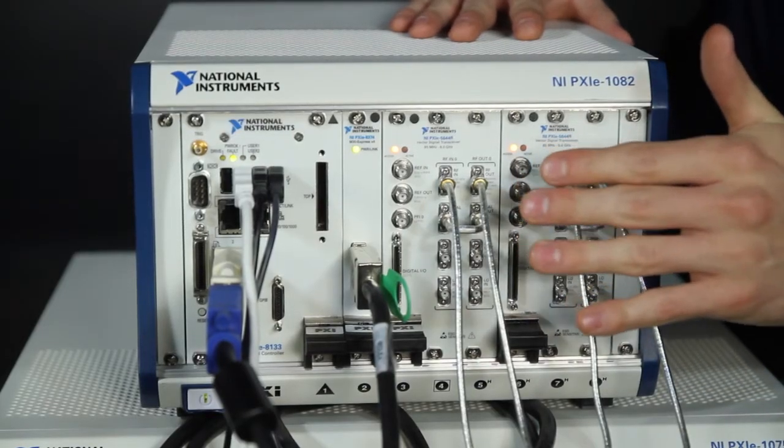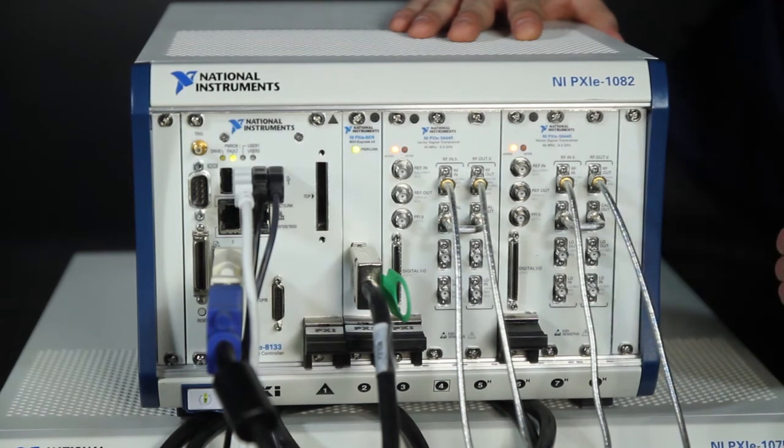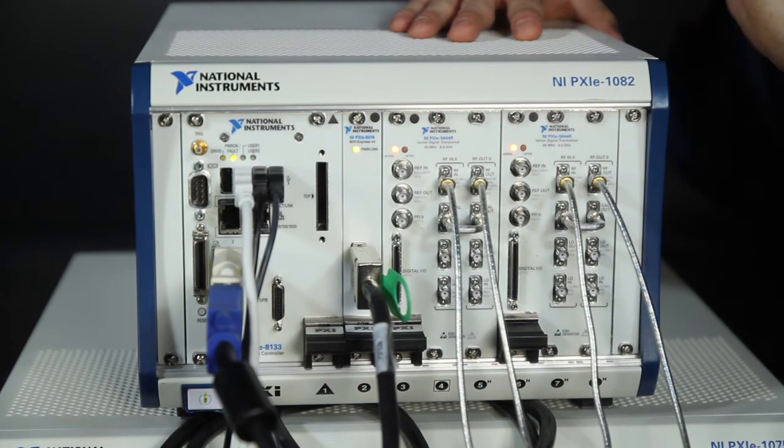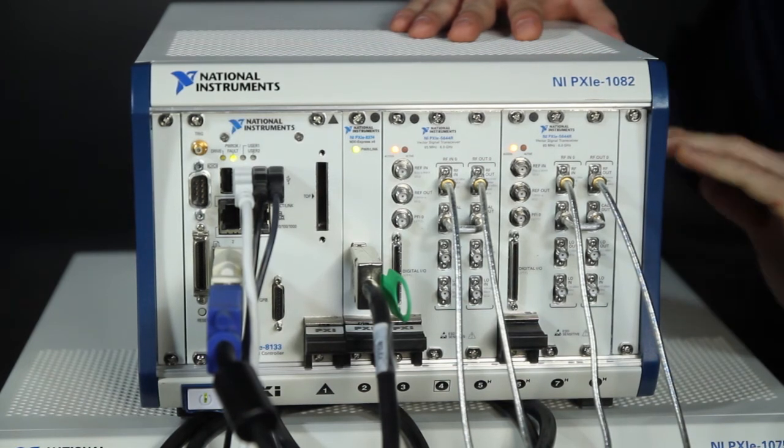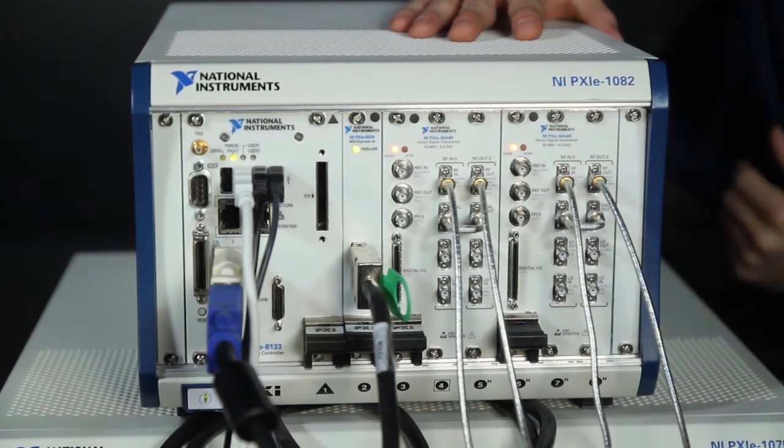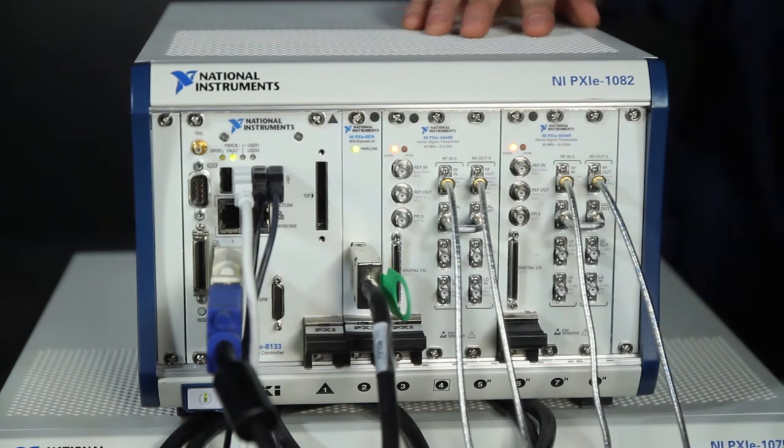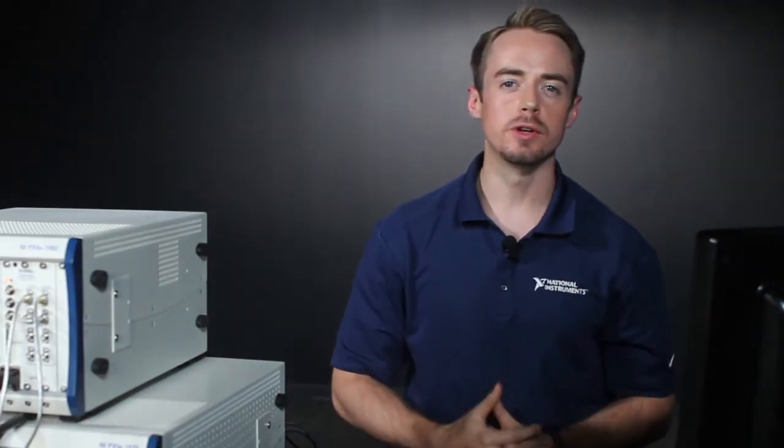In this case, we have two vector signal transceivers in an 8-slot PXI Express chassis, receiving a signal from two generators, applying channel fading models, and then outputting a signal back to some spectrum analyzers, where we'll take a look at the results. So let's take a look at what this would look like in LabVIEW.